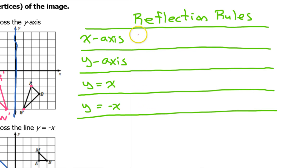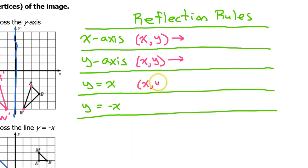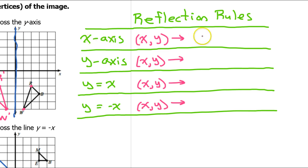When we do a reflection over the x-axis, the x-coordinate doesn't change but the y-value changes to the opposite sign. Let's write that as a rule. For a generic point (x, y), a reflection over the x-axis gives (x, −y). Note that negative y here doesn't mean the y-coordinate will always be negative — it just means it will be the opposite sign of whatever it was. If it was negative to begin with, it will turn positive.